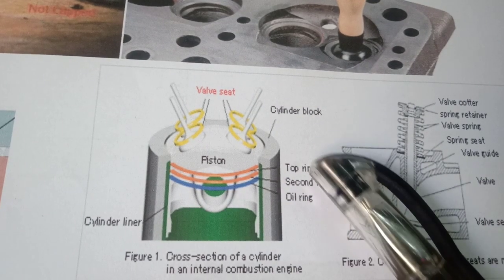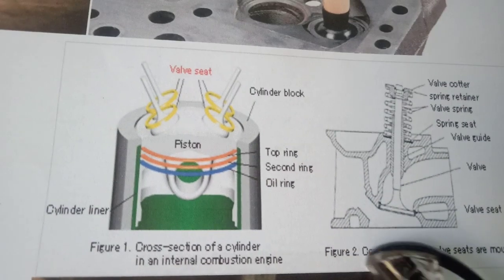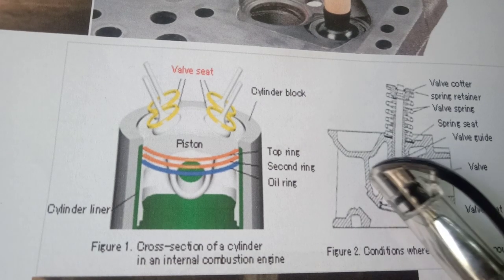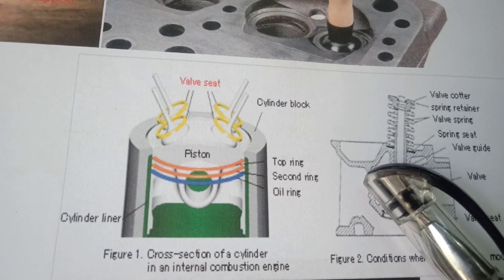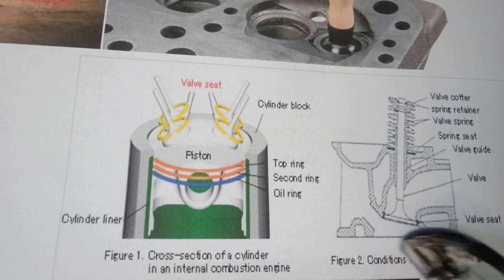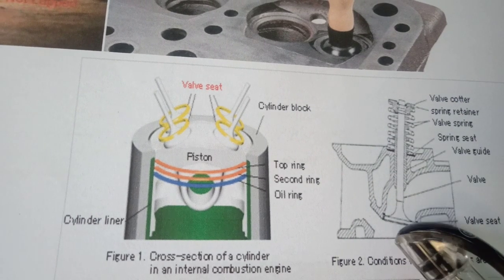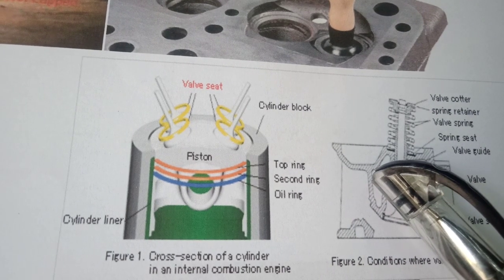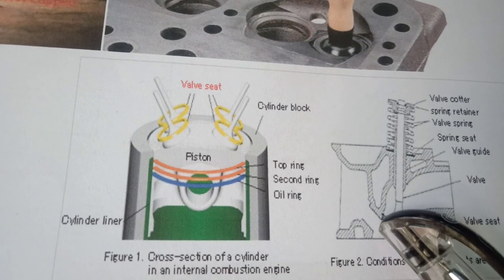So if there is blue smoke, loss of power, and loss of fuel efficiency, there is a high possibility that the valve or valve seat is in a worn-out condition. To rectify this problem, a new valve has to be installed, the valve seat has to be changed, and before installing the new valve and valve seat, the lapping process should be done.